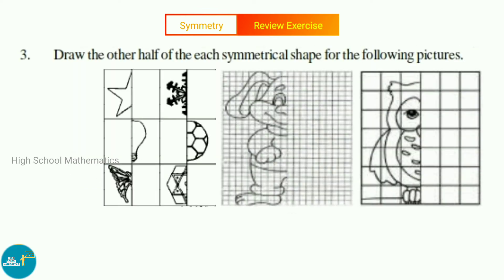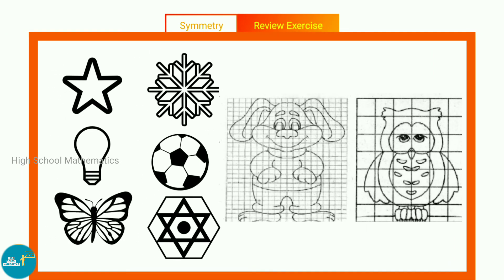See now question number three: Draw the other half of each symmetrical shape for the following pictures. Let us see the solution. Here we have drawn the other parts of the given figures so that first one is a star, second one is a bulb, third one is a butterfly.